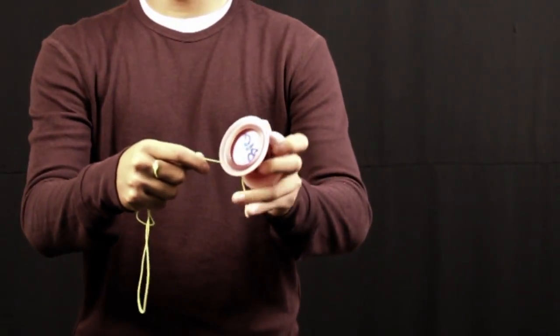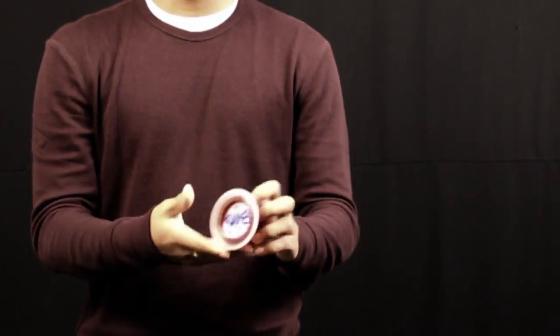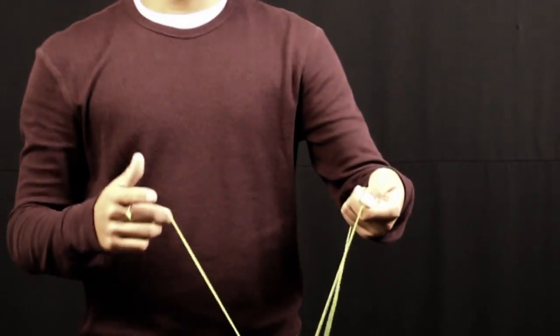And then once it gets closer to the middle, you can let go and just continue to roll it up. And you don't have to worry about that string because it's going to come untangled when you throw it.